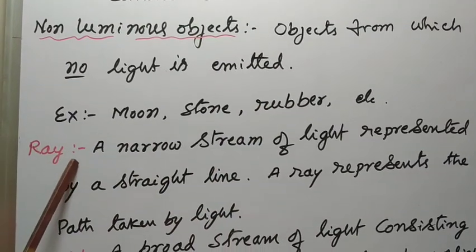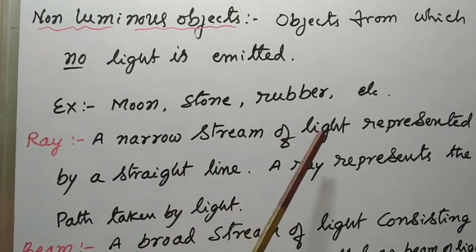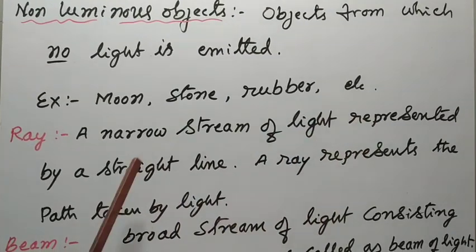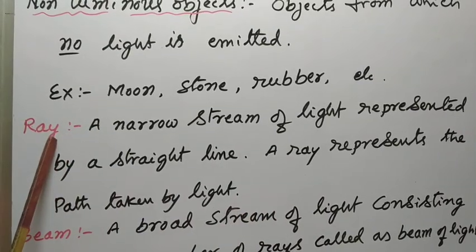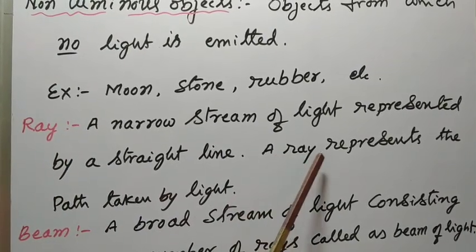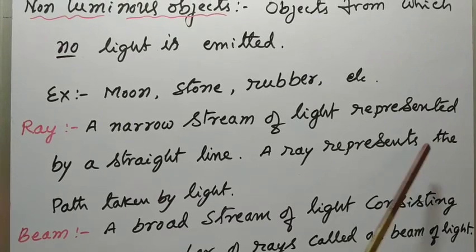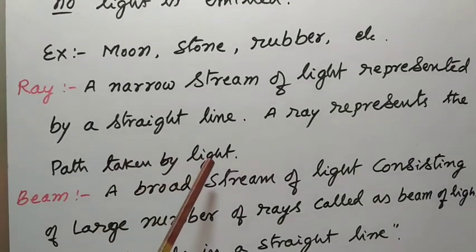A ray is a narrow stream of light represented by a straight line. A ray represents the path taken by light.